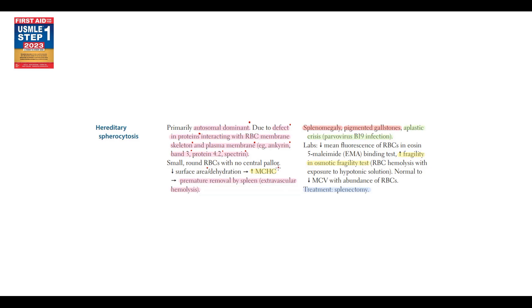With decreasing surface area of red blood cells, the mean corpuscular hemoglobin concentration increases, which is an important diagnostic feature of hereditary spherocytosis. The problem with spherocytes is that such cells have decreased flexibility.